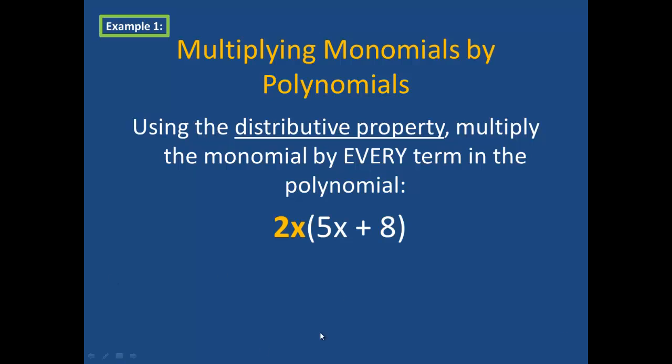In example 1, we have the monomial 2x multiplied by a binomial 5x plus 8. We're going to make sure that we multiply 2x by each term. So we will do 2x times 5x plus 2x times 8. I'm adding these terms because within this binomial it is an addition operation.